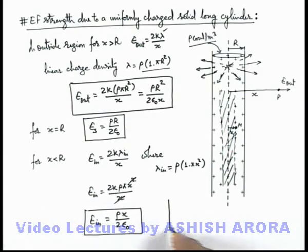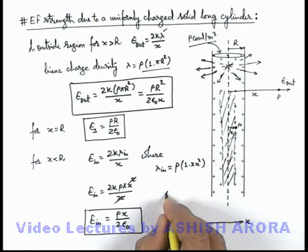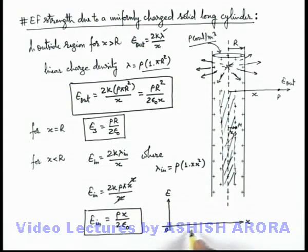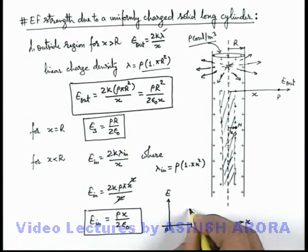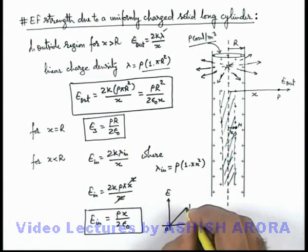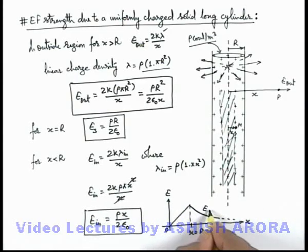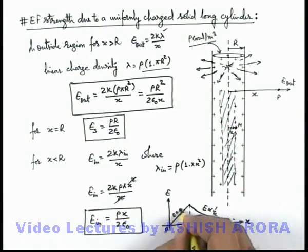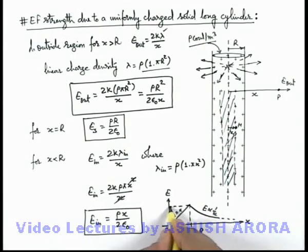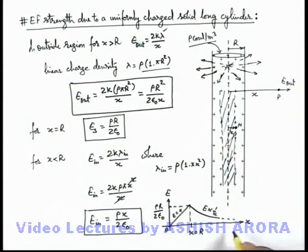If we just plot the variation curve of electric field with distance, then again you can see from central axis to the surface where x is equal to R, it is a direct proportional relation. Then onward it'll be decreasing inversely proportional to x, so it'll be a rectangular hyperbola and here it'll be a straight line. On surface result you can use as ρR/2ε₀. This is the curve we use.